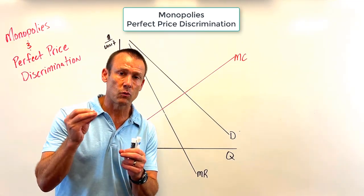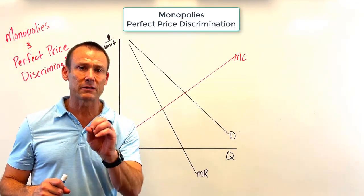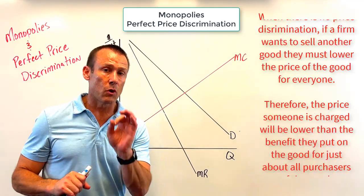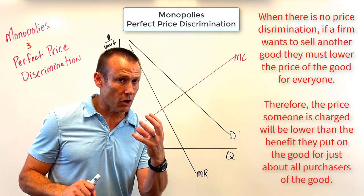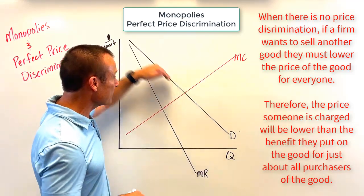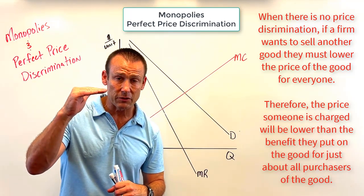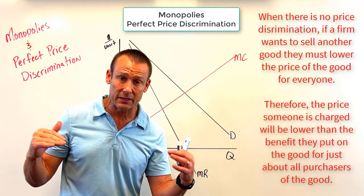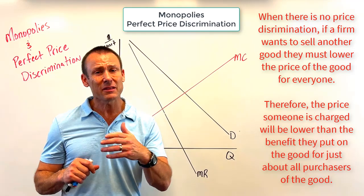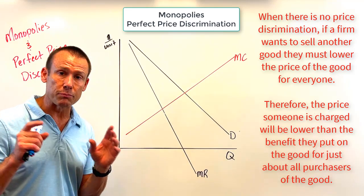The marginal revenue curve is the additional revenue the firm gets. In a situation of no price discrimination, every time a firm wants to sell another good they have to lower the price for everybody. The benefit consumers receive from the good is not changing — nothing's happening to the demand curve — but marginal revenue changes because lowering the price for everyone has implications on total revenue and marginal revenue.